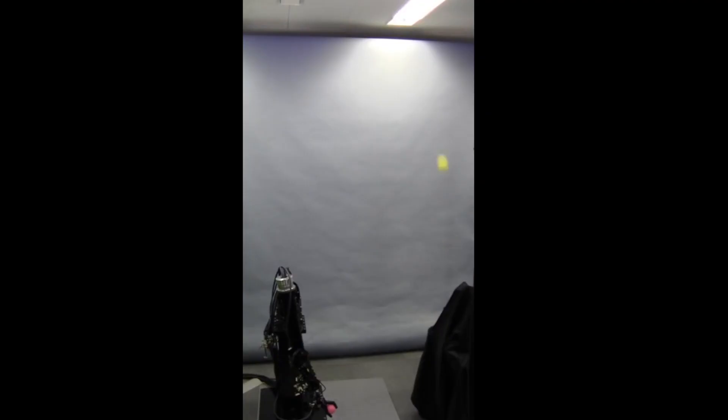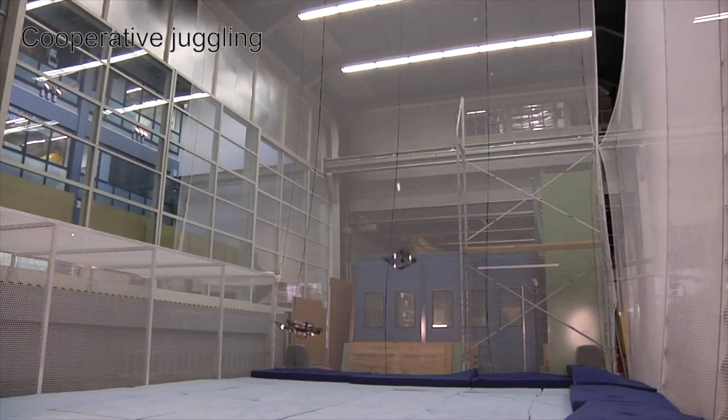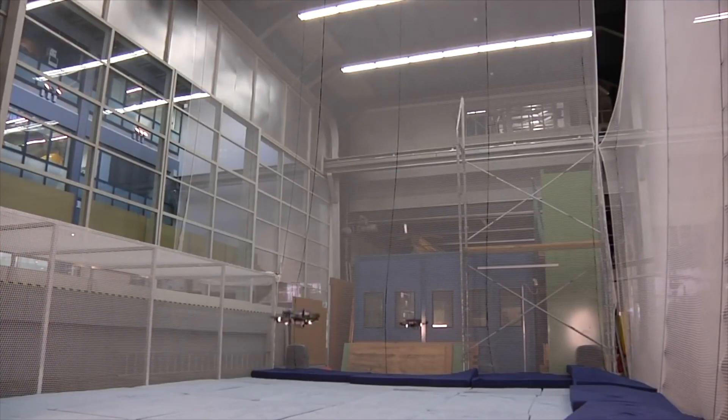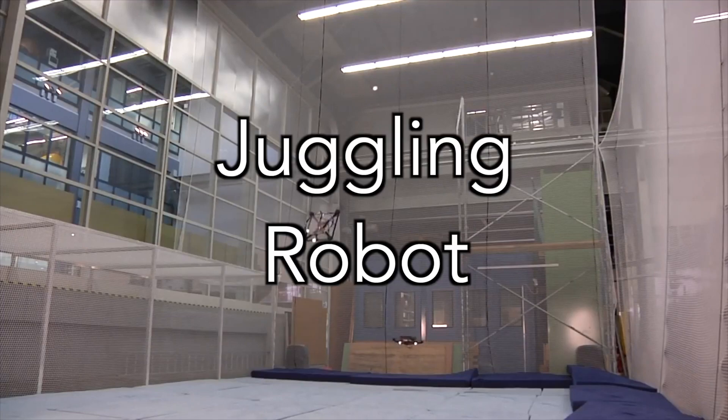So at a minimum, for something to be a juggling robot, it can't just emulate the motions of a human juggler, it must also emulate the brain of a juggler. It has to know it is juggling and then it is a juggling robot.